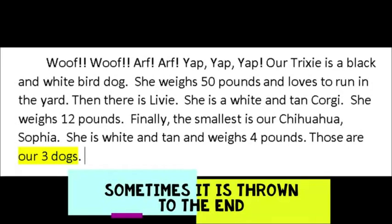Every once in a while, you will see an author throw the main idea to the very end. In this example, it's the same information but in a different order: 'Woof, woof, woof. Arf, arf. Yap, yap, yap. Our Trixie is a black and white bird dog. She weighs 50 pounds and loves to run in the yard. Then there's Libby — a white and tan corgi, weighing 12 pounds. And finally, the smallest is our chihuahua, Sophia. She's white and tan and weighs 4 pounds. Those are our three dogs.' The main idea appears at the end.